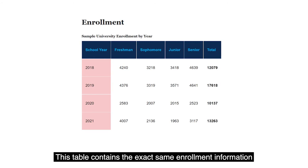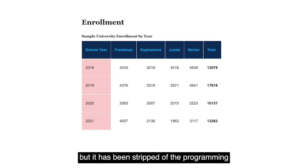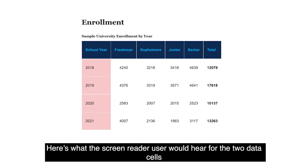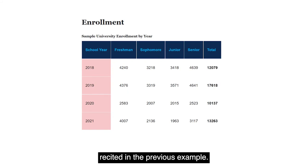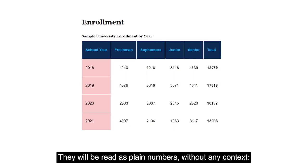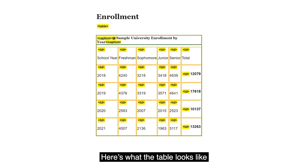Let's see how this works when the programmatic row and column headers are missing. This table contains the exact same enrollment information as the previous example, but it has been stripped of the programming that made it accessible. Here's what the screen reader user would hear for the two data cells recited in the previous example — they will be read as plain numbers without any context: 3319 and 2015.